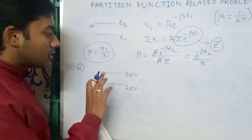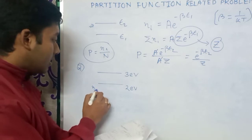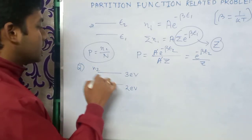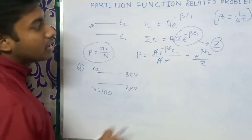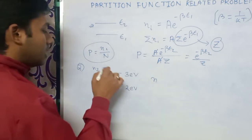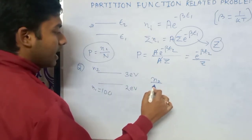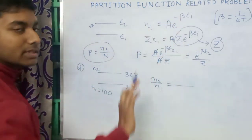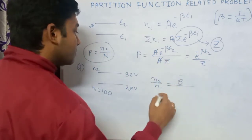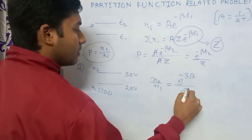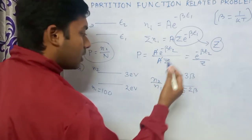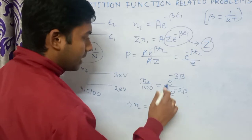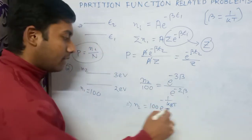Suppose we have two energy levels: 2 electron volts and 3 electron volts, and the number of particles in the first level is 100. To find n_2, we take the ratio n_2 divided by n_1. The constant A cancels, giving e to the power minus 3 beta divided by e to the power minus 2 beta. Since n_1 is 100, n_2 equals 100 times e to the power minus 1 by k_b T.